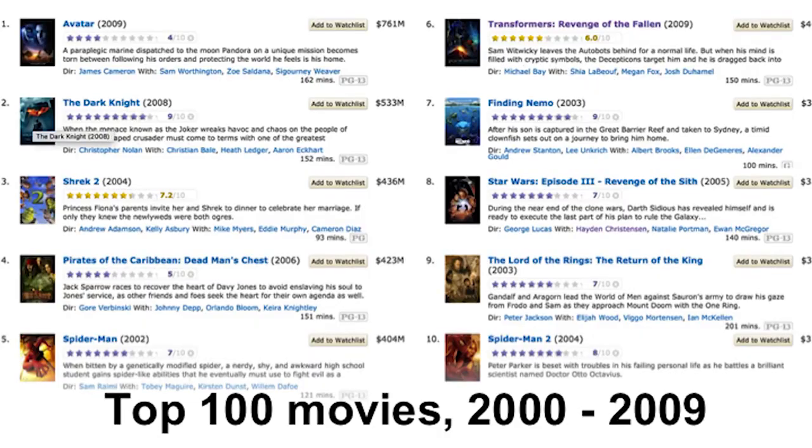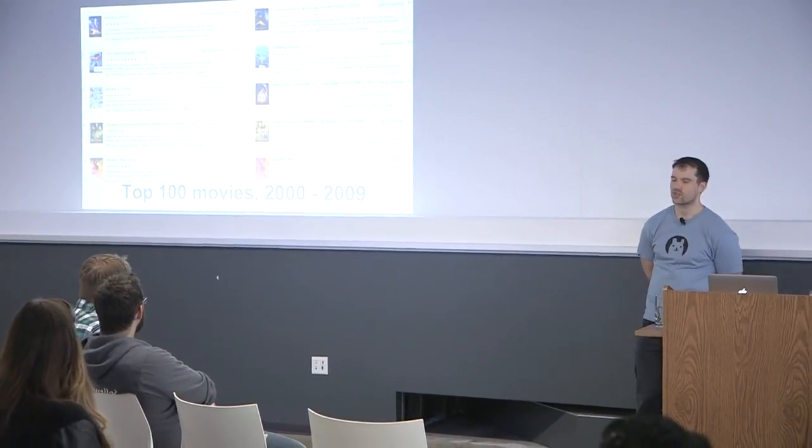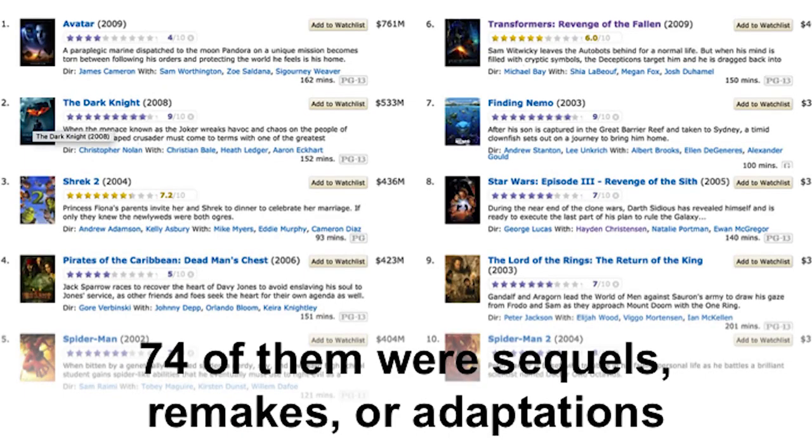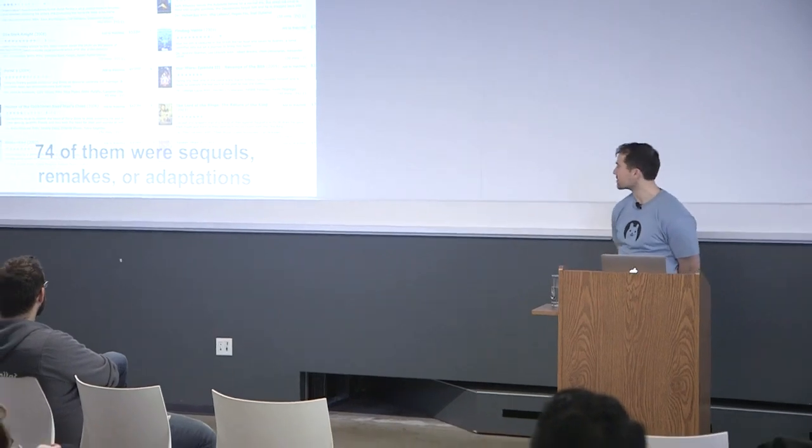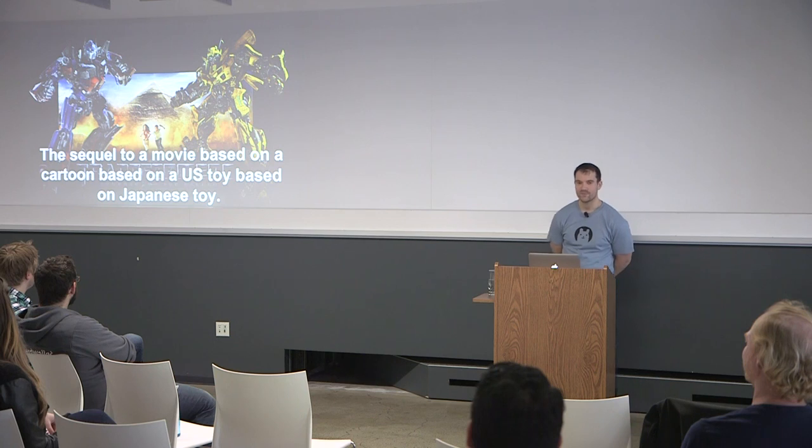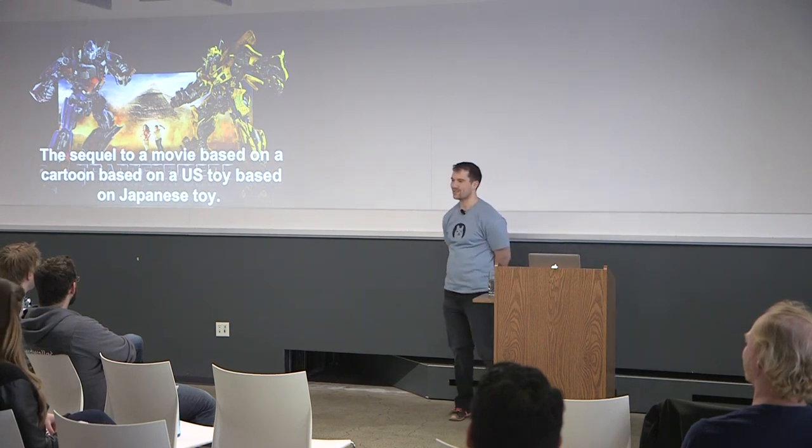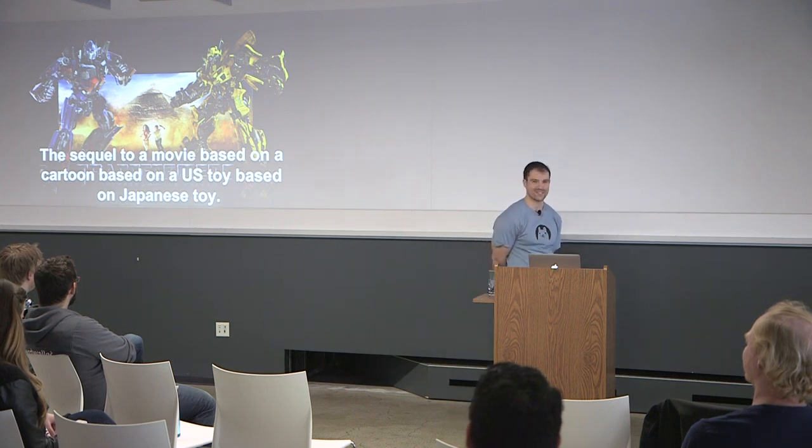Another interesting fact. I don't know if you guys can see that from where you are, but that's a list of the top 100 movies based on revenue from 2000 to 2009. There's movies in there like Shrek 2 and Star Wars Episode 3 and Lord of the Rings Return of the King. And the reason I bring them up is that 74 of those top 100 movies were sequels, remakes, or adaptations. The movies that we love are not particularly original. The really fun one is actually number six on the list, Transformers Revenge of the Fallen. The reason that this one is fun is this paragon of originality is a sequel to a movie based on a cartoon, based on a US line of toys, based on a Japanese line of toys.